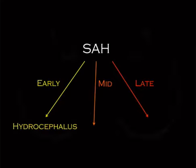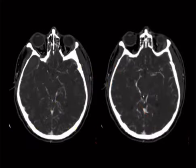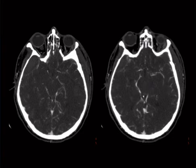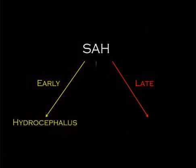Mid-complication: on CTA you'll see a lot of pruned vessels or absent vessels — look how skinny some of these areas are. There is diffuse vasospasm. Not everybody who has subarachnoid hemorrhage gets vasospasm, but the question is: when does it occur and who's at more risk?